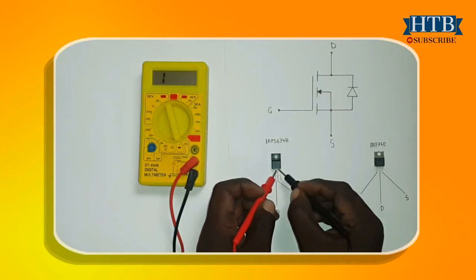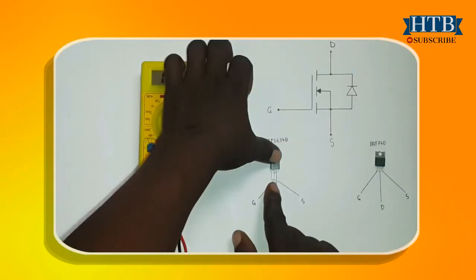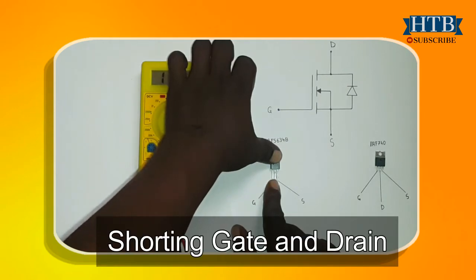After doing this, we must read a connection across drain and source. Touching or shorting the drain and source discharges the MOSFET. I am going to discharge this MOSFET by touching the drain and source using my finger.